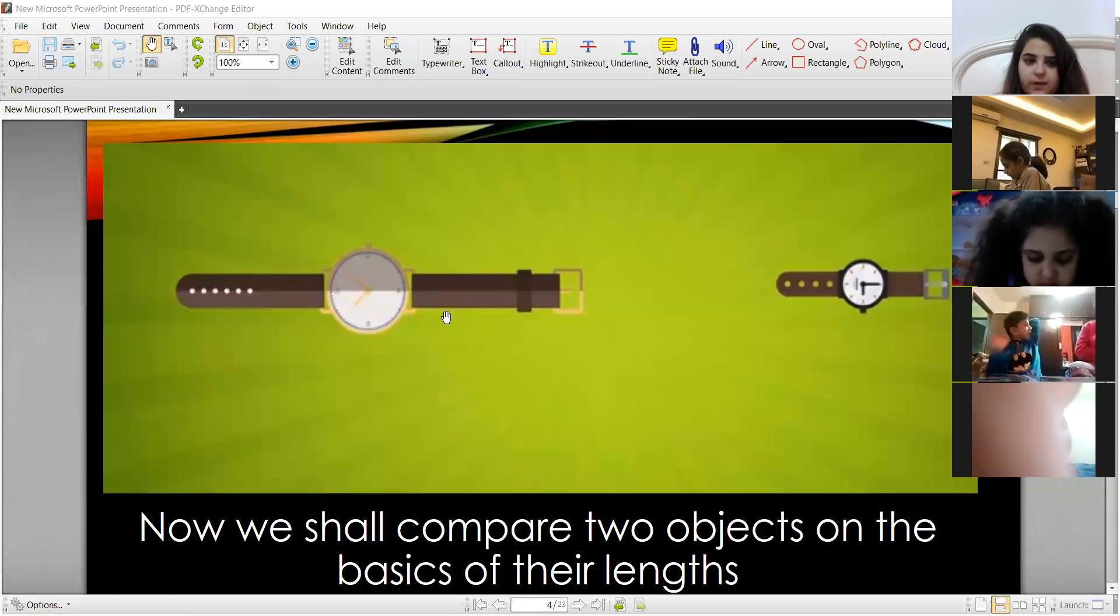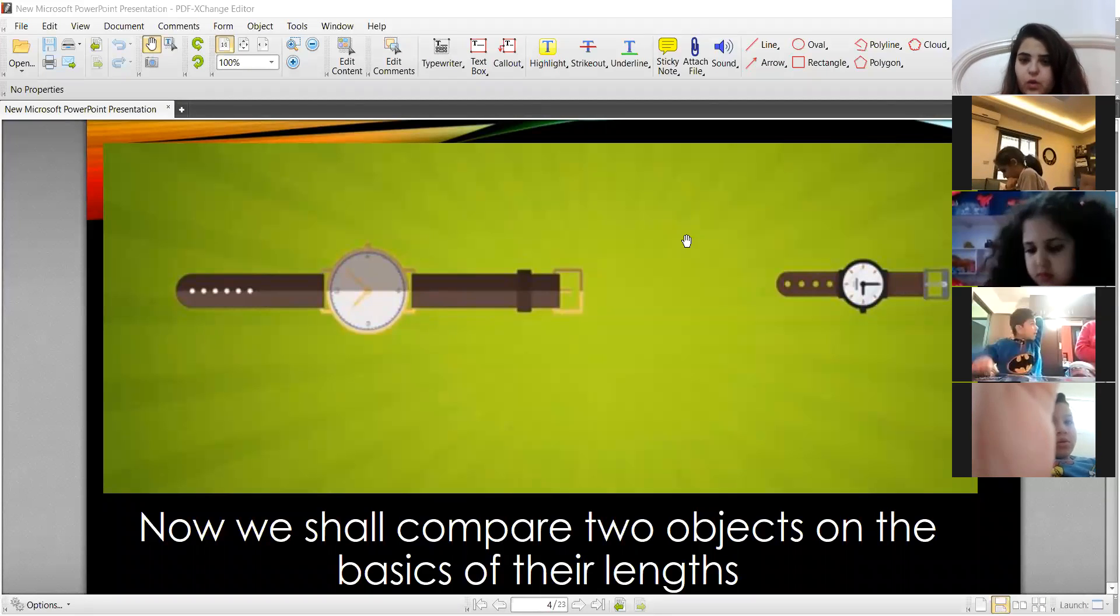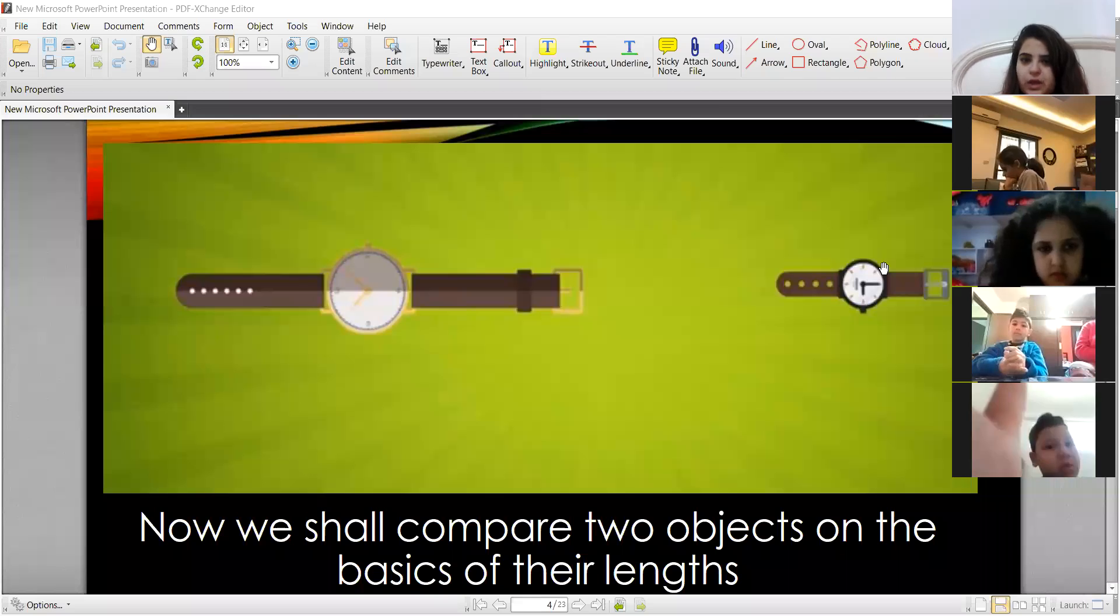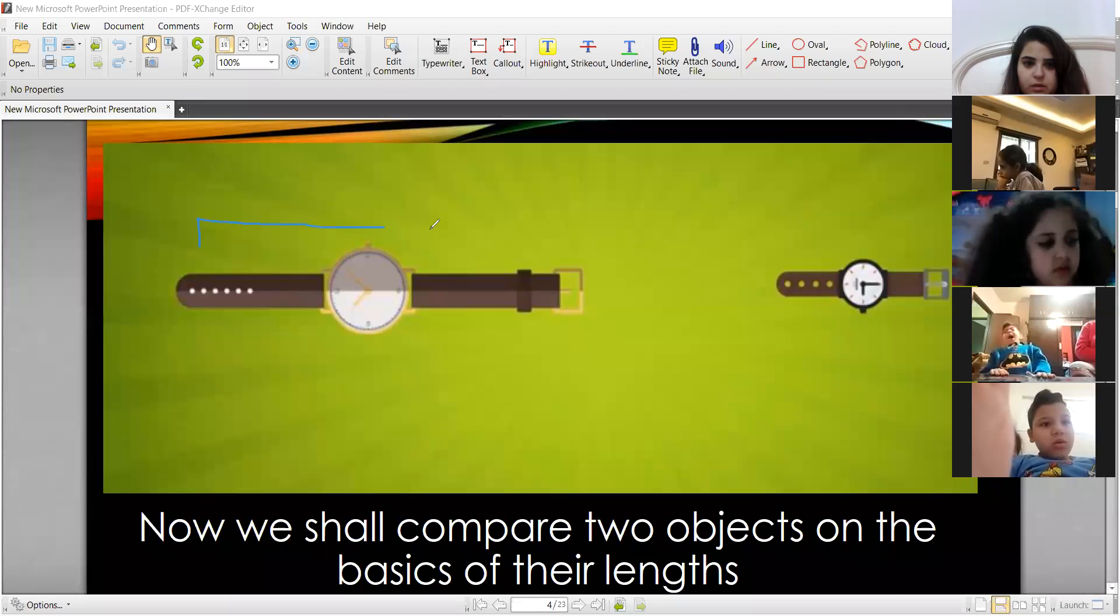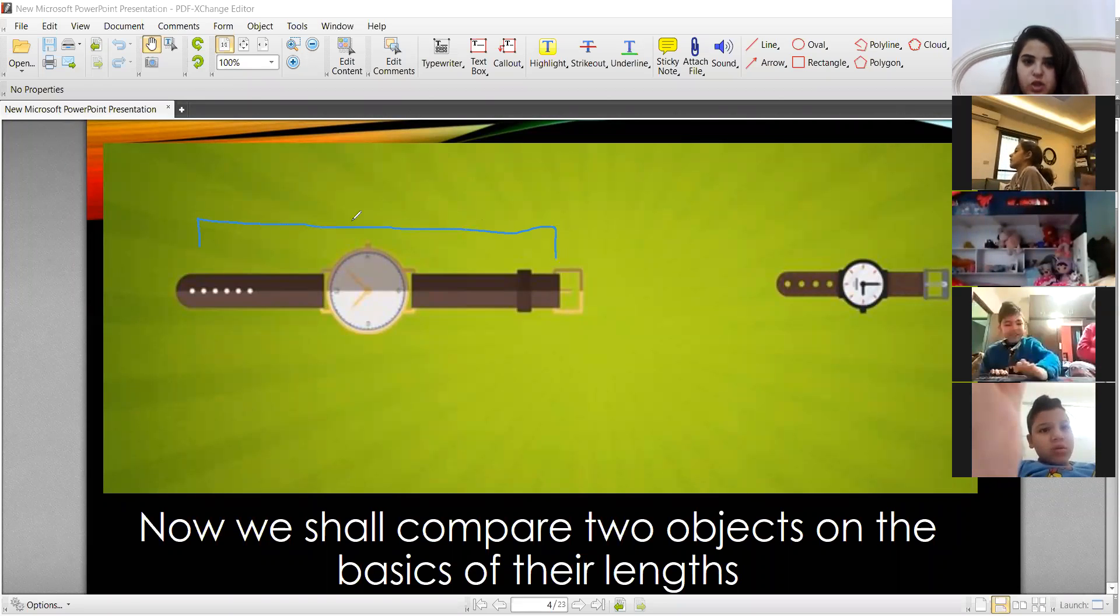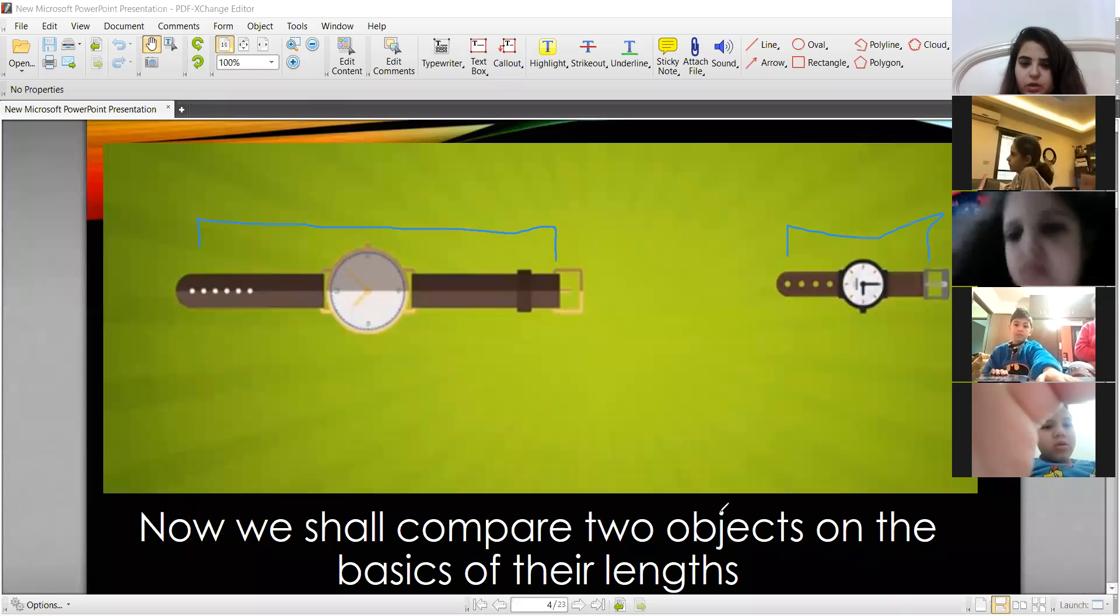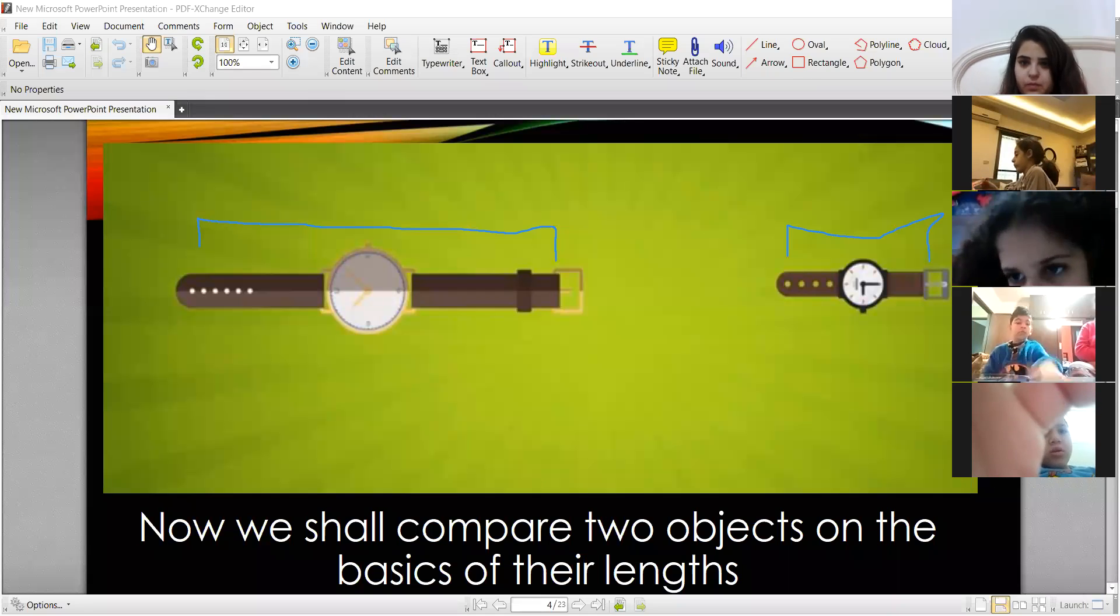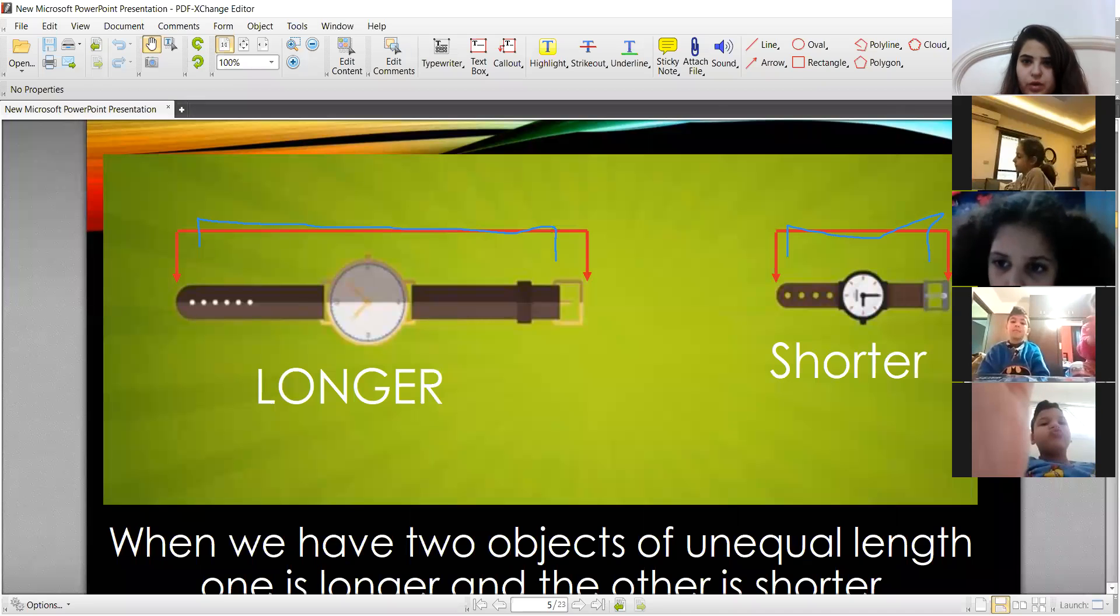For example, this is long and this is short. This is long and shorter. Okay, this is long and shorter. Any longer and shorter. Okay. Longer and shorter.